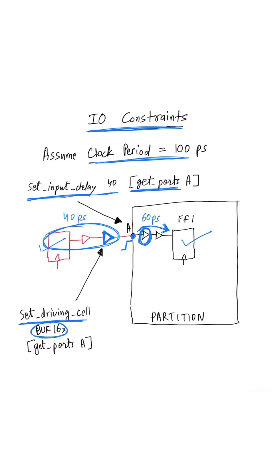So these are the two main constraints which are used for input ports in the design.